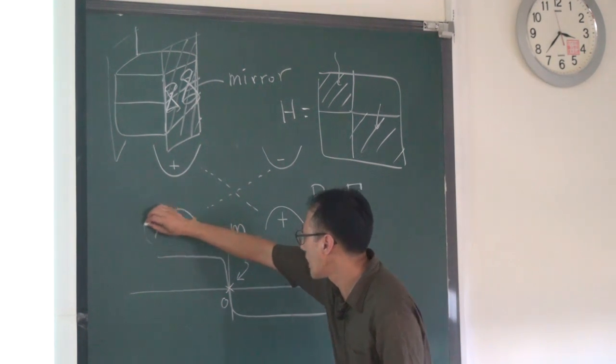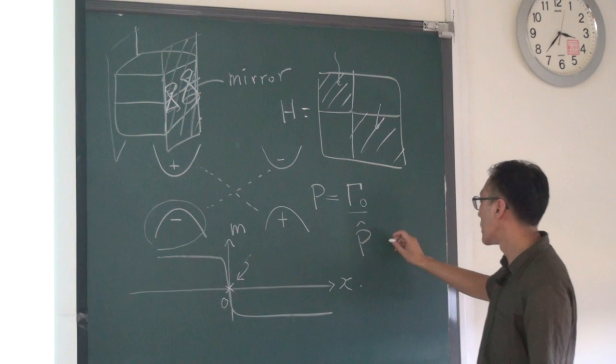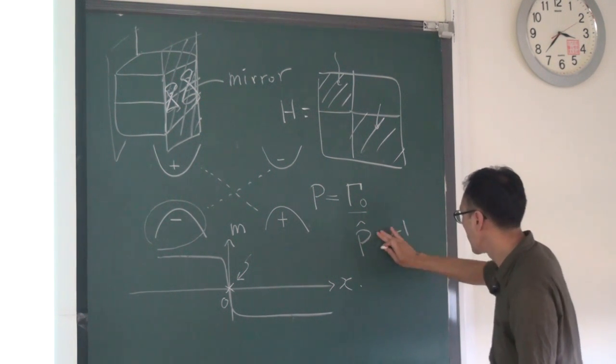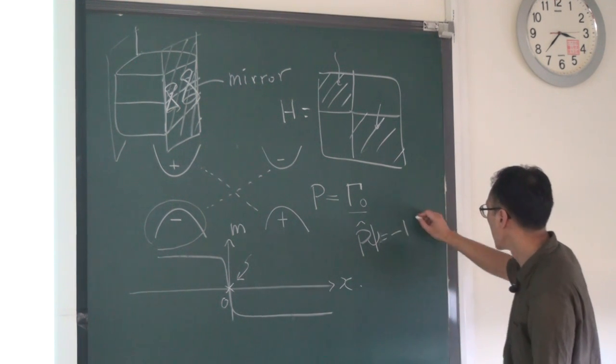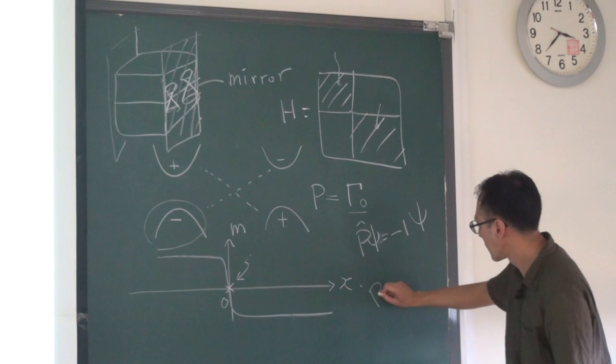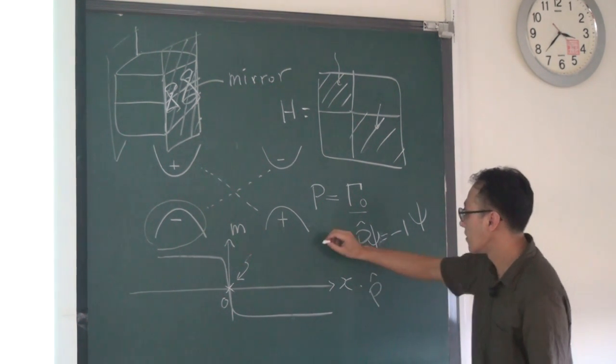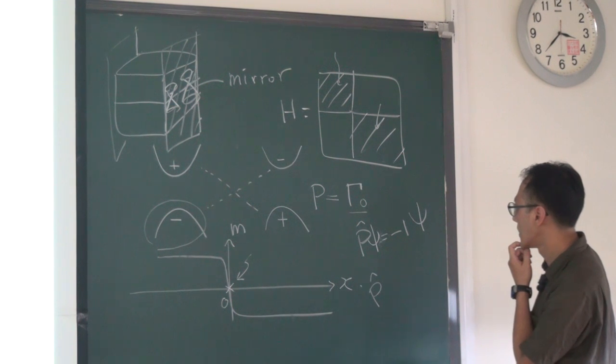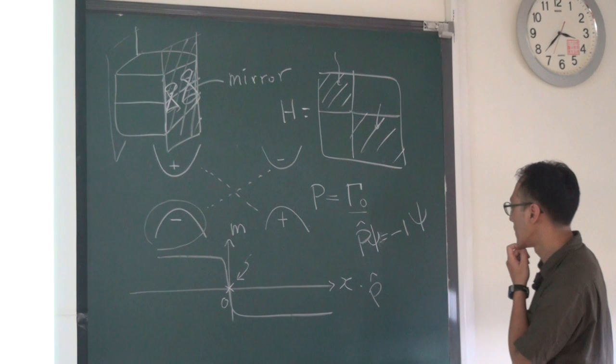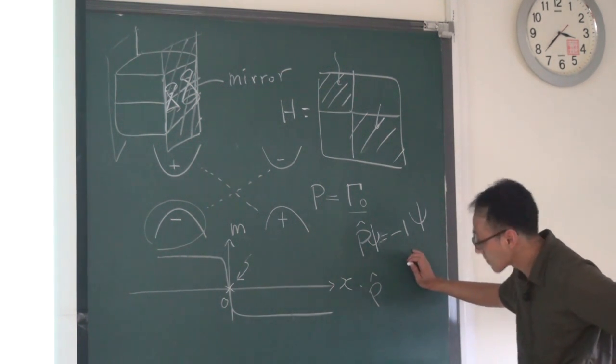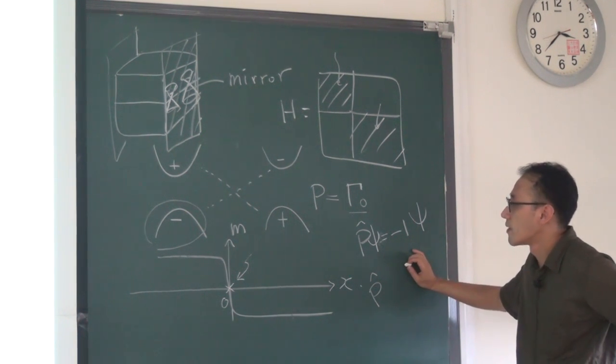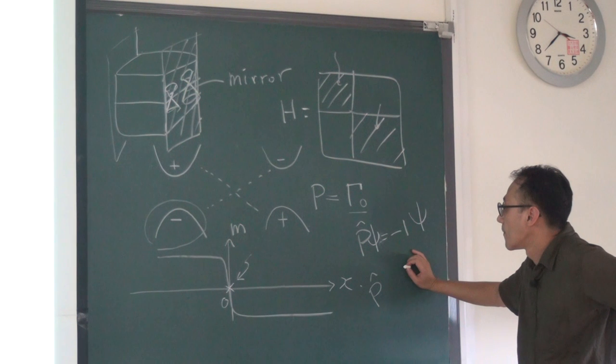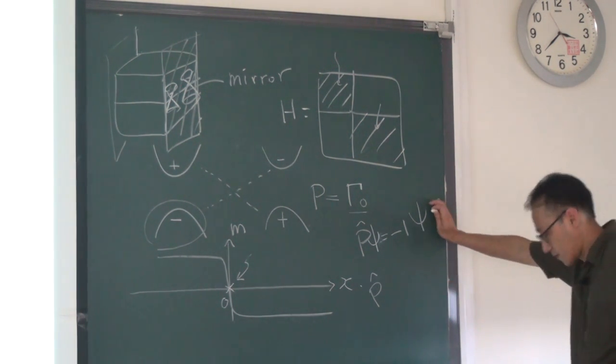And therefore, if you identify this as your parity operator, then your parity eigenvalue, the parity eigenvalue for this state here will give you, say, they will give you a minus, if you act on this band, you will get this.